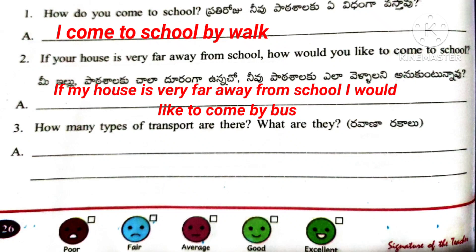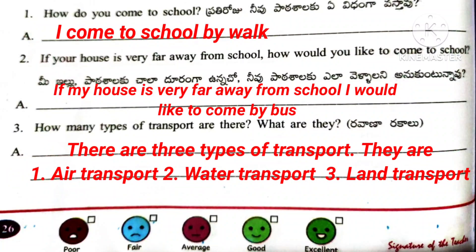Question number 3: How many types of transport are there? What are they? Answer: There are 3 types of transport. They are 1st one Air transport, 2nd Water transport, 3rd one Land transport.